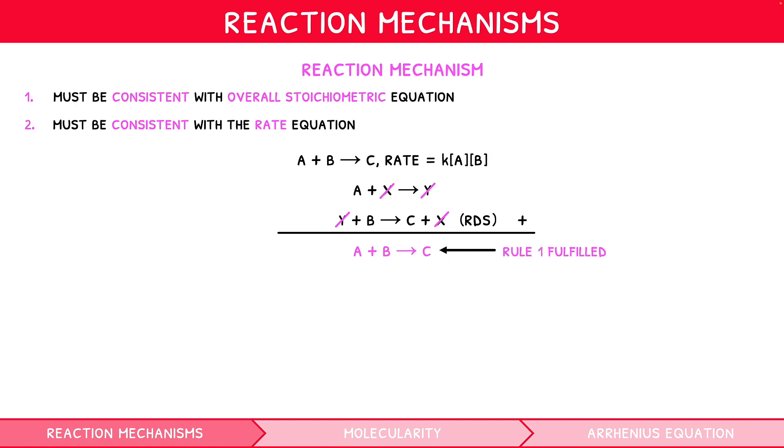Then, since the second reaction is the rate-determining step, both reactants A and B would be included in the rate expression, i.e. rate would equal KAB. Thus rule 2 is fulfilled.